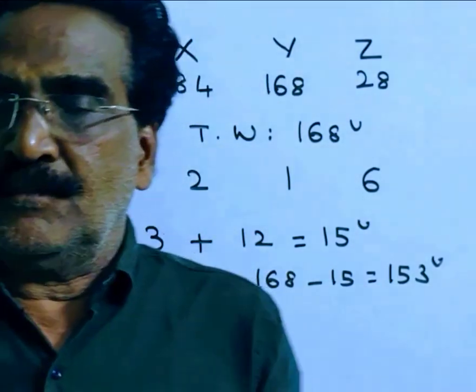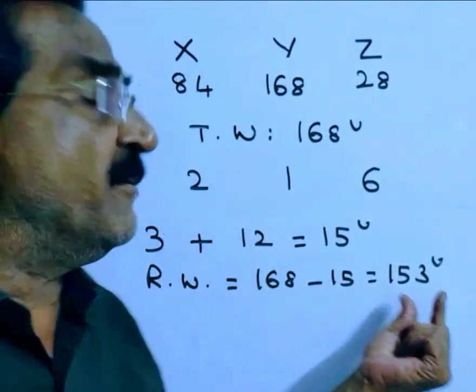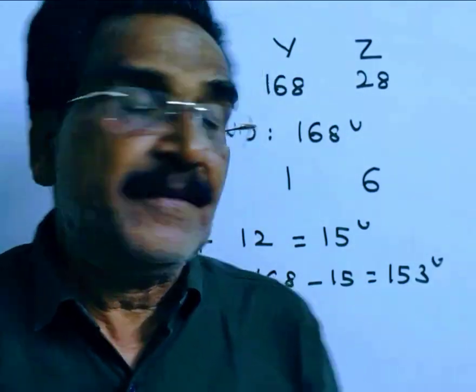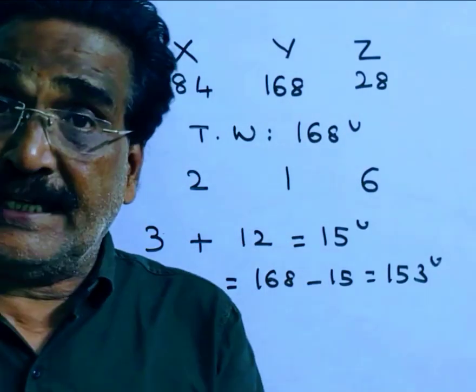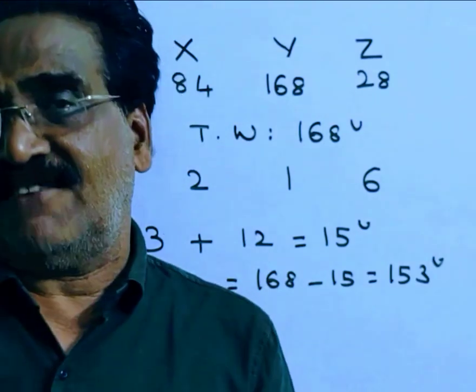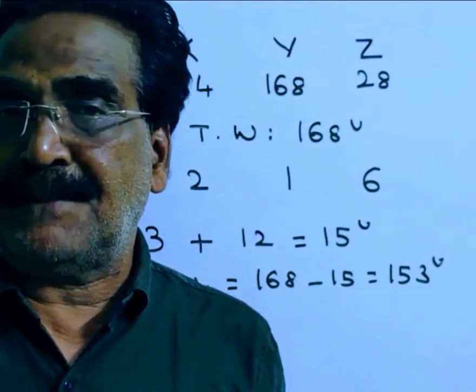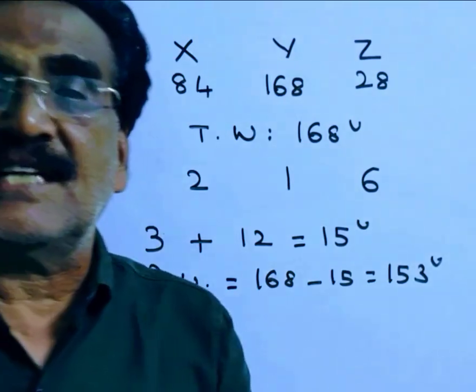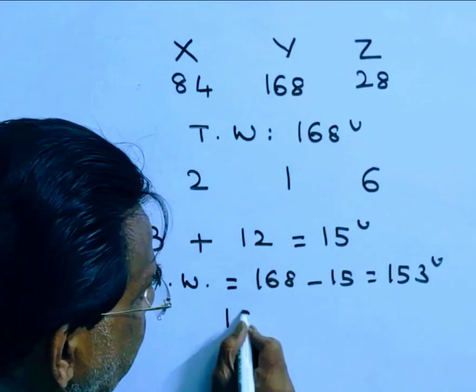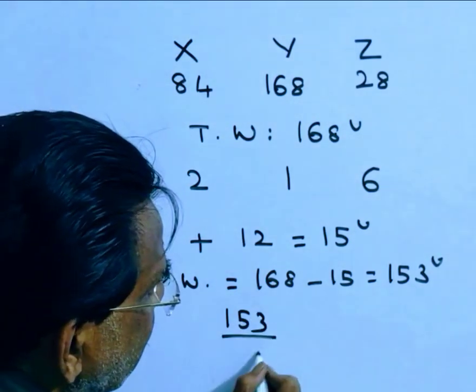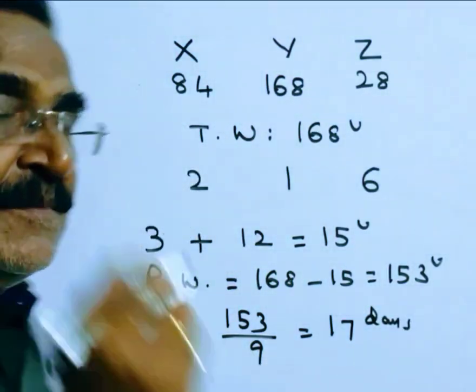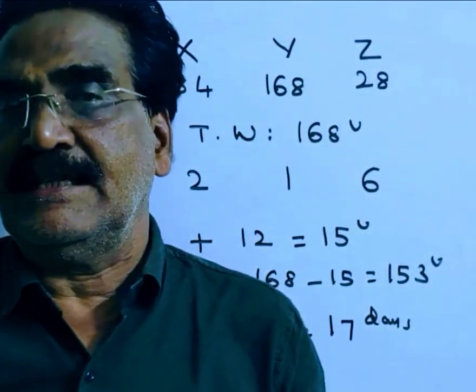Now Z joined. So this 153 units of work will be completed by X plus Y plus Z. If X plus Y plus Z work together, they can complete 2 plus 1 plus 6, 9 units of work per day. So this 153 units of work will be completed by them in 153 by 9, 17 days. That means Z worked 17 days.